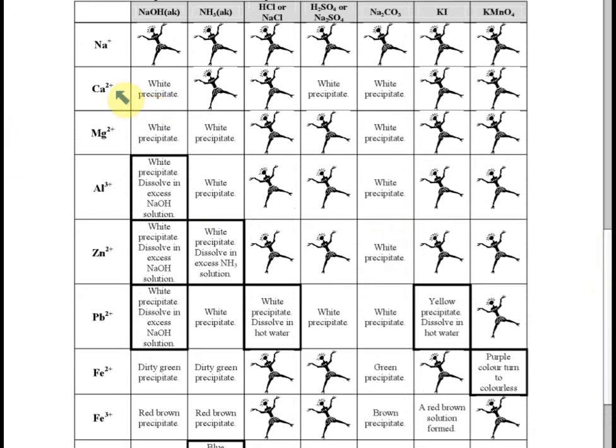What's important is knowing which ones form precipitates — which can be predicted from whether they form an insoluble hydroxide — except for calcium with ammonia, which doesn't form a precipitate because calcium hydroxide is only slightly soluble. For ammonia solution, calcium won't form a precipitate, but most others will. You need to remember which precipitates dissolve in excess sodium hydroxide solution and in excess ammonia solution.